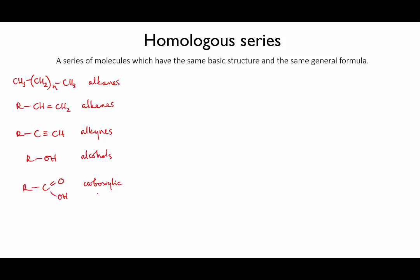The members of each of these groups have the same basic structure and their formulae follow a pattern. For instance, the general formula for an alkane is CnH2n plus 2.